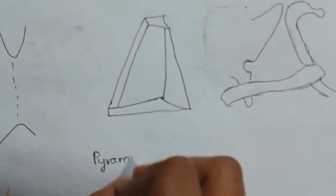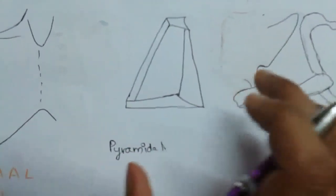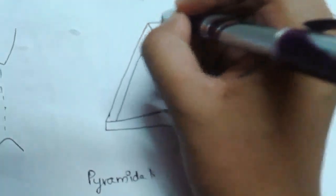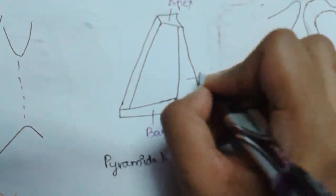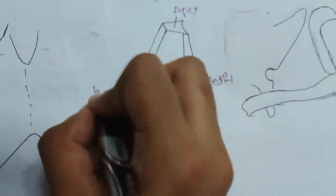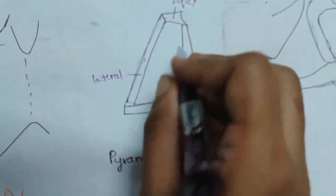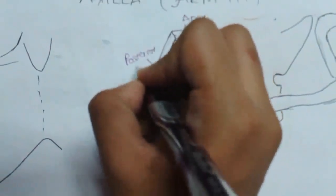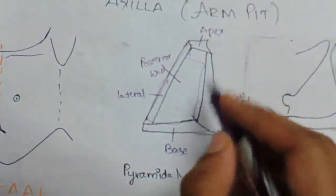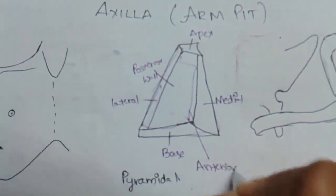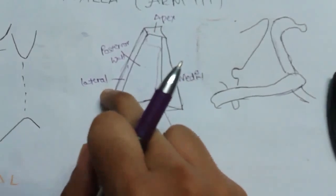Since the axilla is pyramidal in shape, it has an apex and a base, and four walls: a medial wall, a lateral wall, a posterior wall, and an anterior wall. All of these form the boundaries of the axilla.